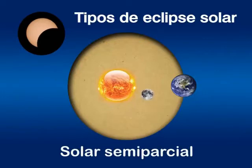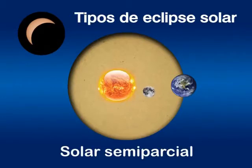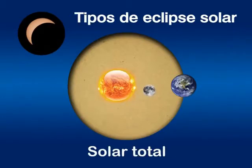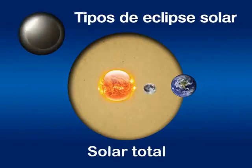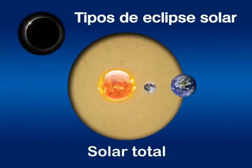El eclipse semiparcial es aquel donde la Luna casi cubre por completo el Sol, pero no lo consigue. El eclipse total es donde la Luna tapa completamente el Sol.